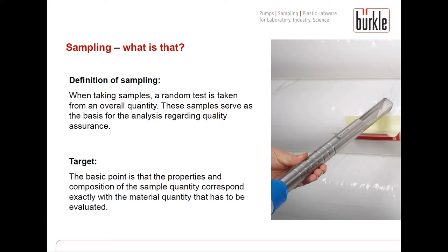But what is sampling exactly? When taking a sample, a random test is taken from an overall quantity. These samples serve as the basis for analysis regarding quality assurance. The basic point is that the properties and composition of the sample have to correspond exactly with the material quantity that has to be evaluated. Otherwise you don't get reliable and authentic information.